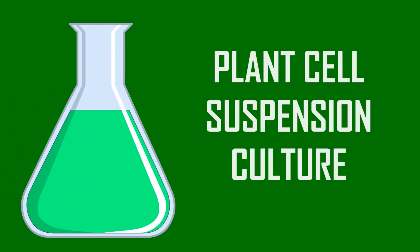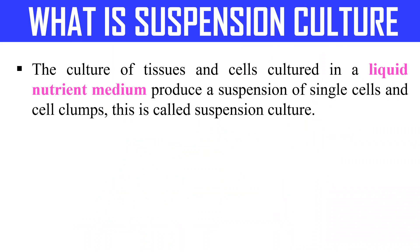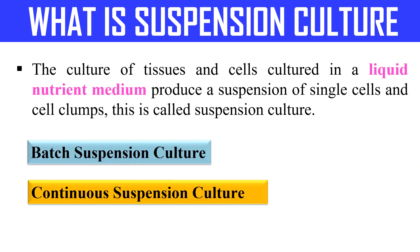Welcome back. In this video I will discuss plant cell suspension culture. Suspension culture is simply when you culture cells in a liquid medium. In plant cell suspension culture, plant cells are cultured in a liquid nutrient medium, producing a suspension of single cells or clumps. This is known as plant cell suspension culture.